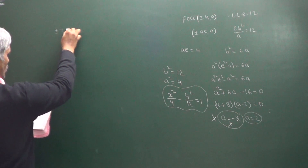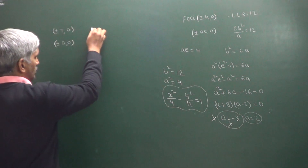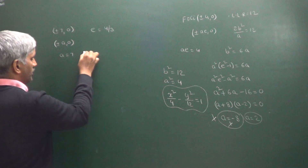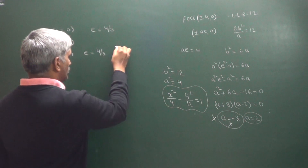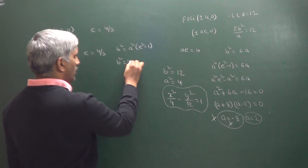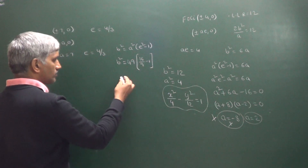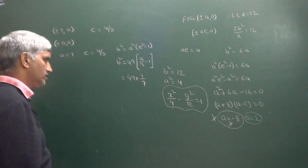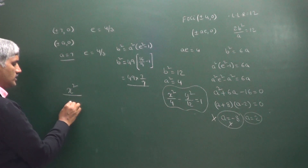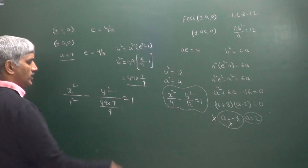The next question gives vertices at (±7, 0) and eccentricity e = 4/3. So A = 7. Using the first form condition B² = A²(E² − 1): B² = 49 × (16/9 − 1) = 49 × 7/9. With A² = 49, the equation of hyperbola is x²/49 − y²/(49×7/9) = 1.